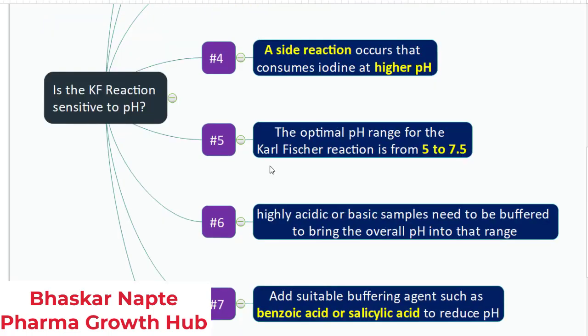So I hope you now must be clear whether the KF reaction is sensitive to pH. It is. And if you are using some strong acid or alkaline samples for the evaluation of the water content, then you need to add either acidifiers or alkalizing agents to maintain the pH in the range of 5 to 7.5, because this is the pH range where the reaction rate is optimal.